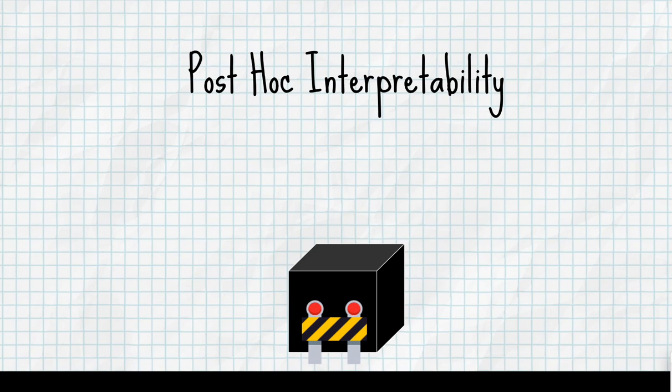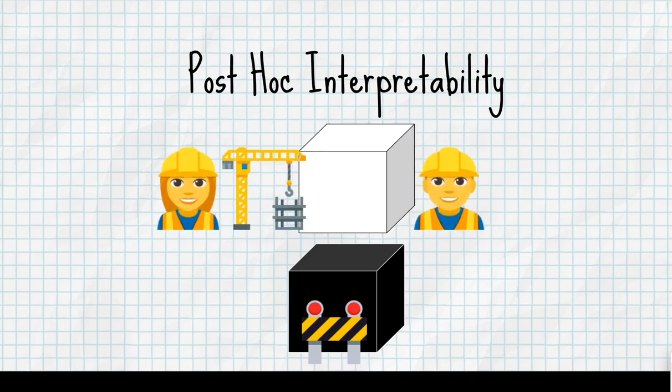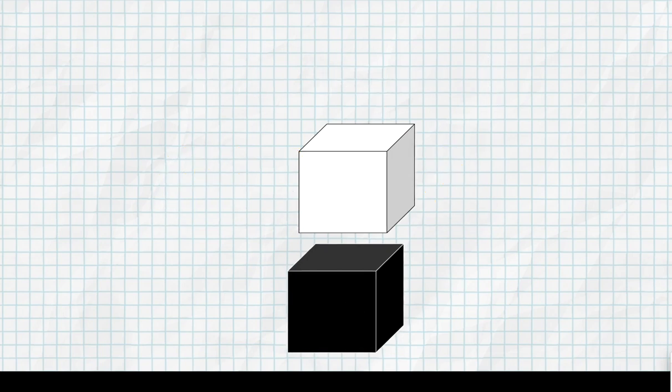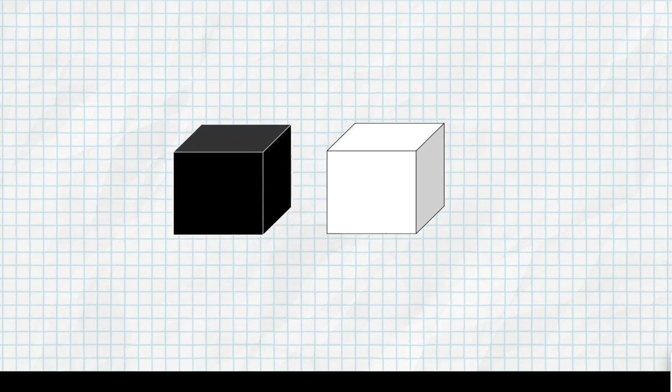A final set of proposed approaches is to leave the black box model as is and build a white box model which attempts to reproduce the logic of the black box. Because the complex model is left untouched, accuracy can be maintained whilst gaining the benefit of explanations from the interpretable model. This is the approach we apply to recommendation systems.